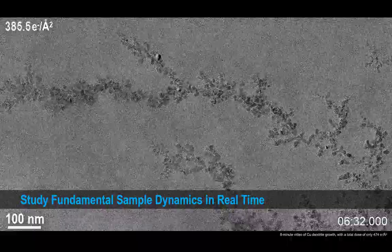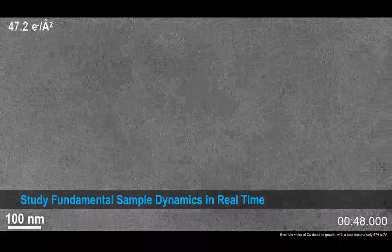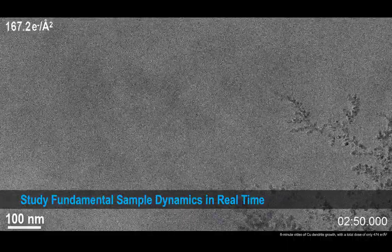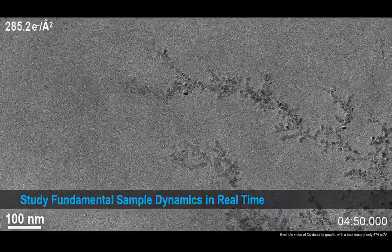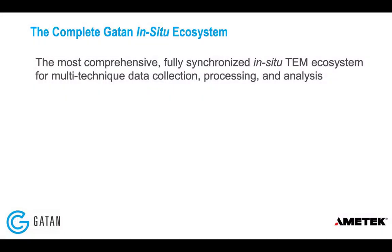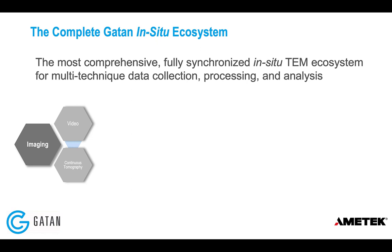There are five different types of Gatan products which together form the most comprehensive fully synchronized in-situ TEM data ecosystem for multi-technique data collection, processing, and analysis. The first component, the cornerstone of many in-situ experiments, are imaging products like cameras. Microscopists want to be able to see their sample reaction and record video data of all the dynamic behavior. Gatan imaging products have capabilities for high frame rate data collection and also enable techniques like continuous tomography.